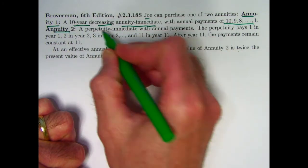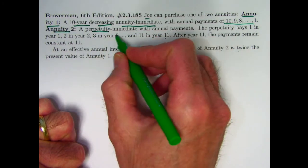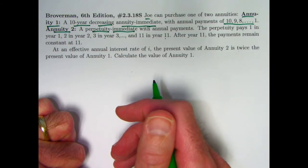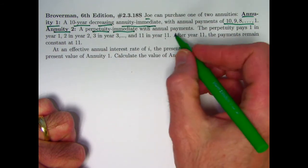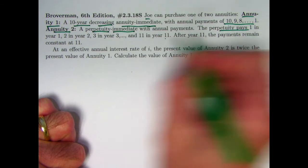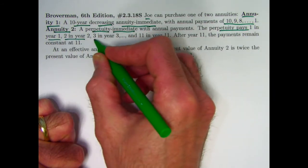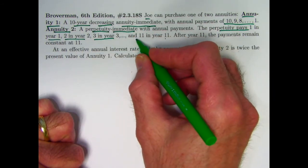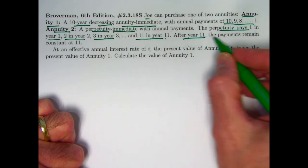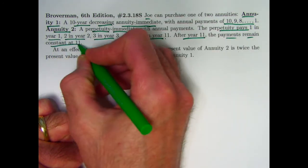And the other annuity is actually a perpetuity. It goes on forever. A perpetuity immediate, the first payment is going to be at the end of the first year. The perpetuity pays 1 in year 1, 2 in year 2, 3 in year 3, etc. up through 11 in year 11. And then after year 11 the payments remain constant at 11.